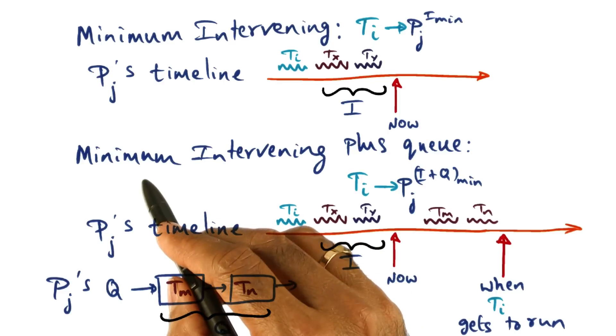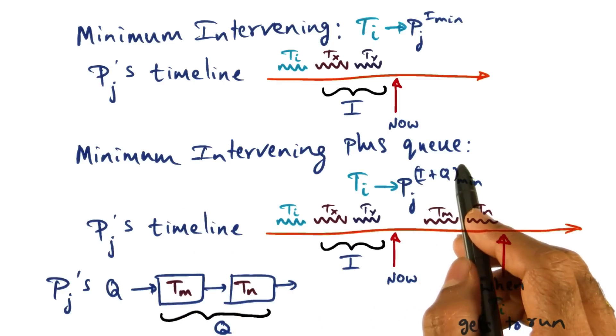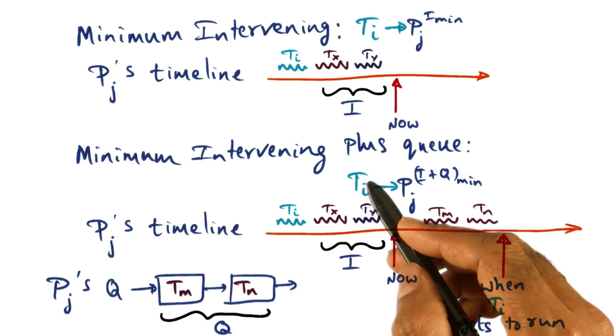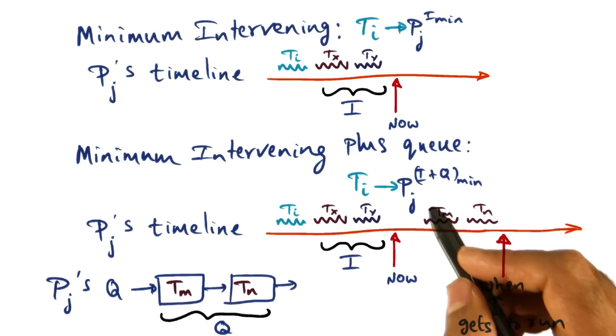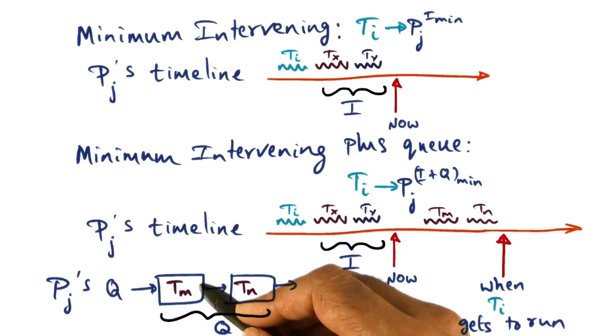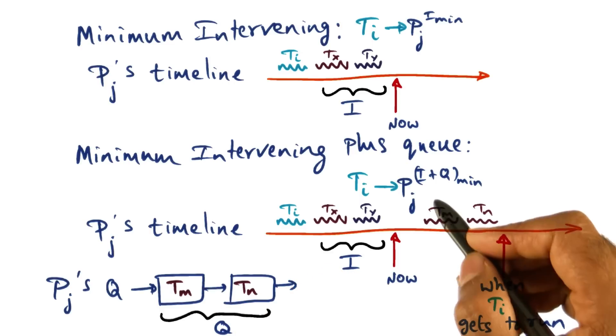So that's the reason that this scheduling policy is called minimum intervening plus q, saying that not only should you take into account the affinity index of a thread with respect to a particular processor, but you should also look at the q of the processor and ask the question, is the q already populated?